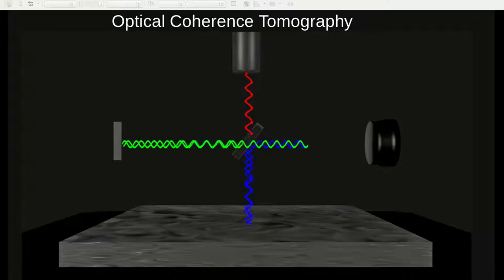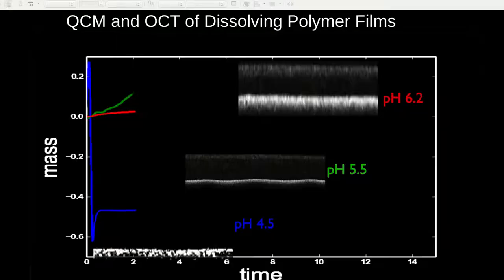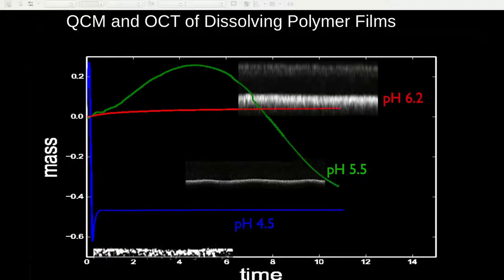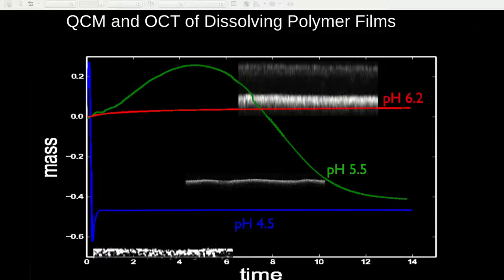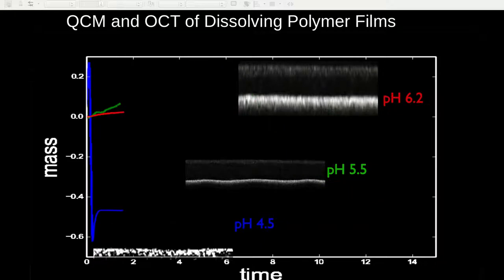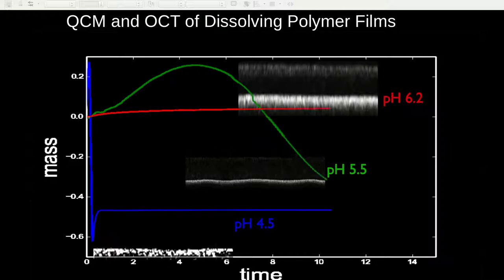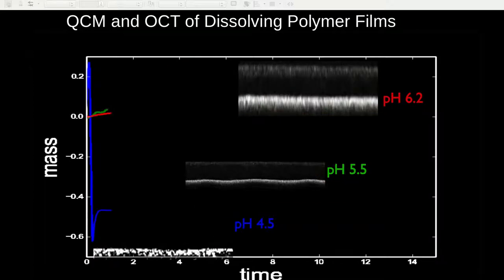Combining OCT with QCM provides a powerful method to measure the dissolution of the polymer films. The following shows a combination of QCM and OCT measurements. In particular, the polymer is cast on a microscope slide and is submersed in buffer solutions of varying pH and measured via OCT. The background graph shows the mass of the polymer film as a function of time as measured by QCM.